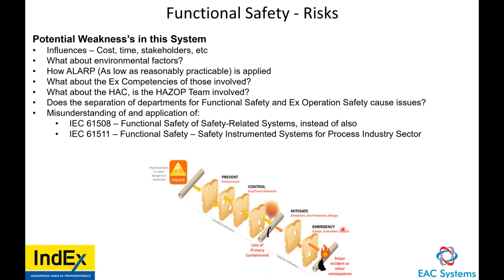There are misunderstandings of different functional safety standards. IEC 61508 refers to safety-related systems broadly, while 61511 refers to the process industry sector. When we talk about risks and the Swiss cheese model, we want to avoid potential hazards by putting controls in place — mitigate, respond to an emergency, prevent containment loss, detect gas, and prevent containment. There are different layers of protection.